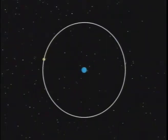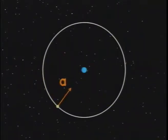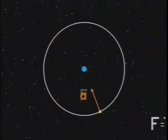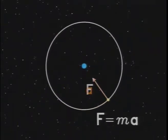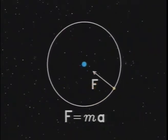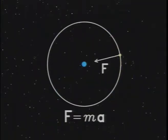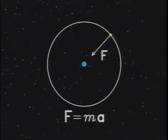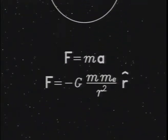Isaac Newton understood that any body that moves in uniform circular motion is being accelerated all of the time. He called this centripetal acceleration. According to Newton's second law, a force is required to produce that continuous acceleration. For a body in orbit, that force is gravity.